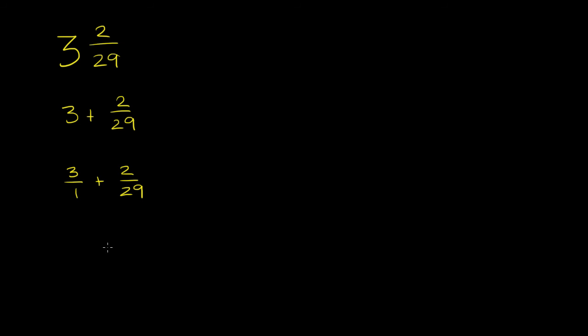The least common multiple of 1 and 29 is 29. So it's going to be something over 29 plus 2/29. If we multiplied our denominator by 29, we have to multiply our numerator by 29. 3 times 29, what is that? That's 87.